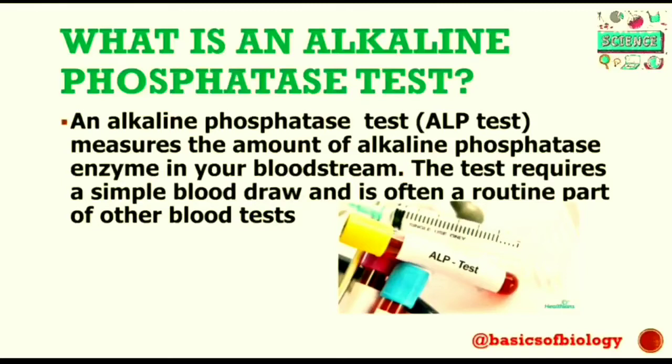An alkaline phosphatase test measures the amount of alkaline phosphatase enzyme in your bloodstream. This test requires a simple blood draw and is often a routine part of other blood tests. Abnormal levels of alkaline phosphatase in your blood most often indicate a problem with your liver, gallbladder, or bones.